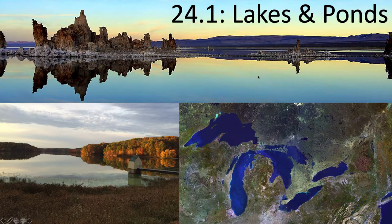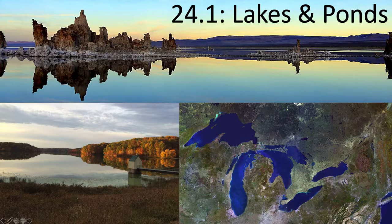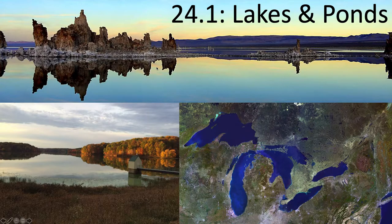Let's first talk about lakes and ponds. This is a picture of Walden Pond — where Henry David Thoreau lived and wrote — in Massachusetts. These are the Great Lakes, which are so large they kind of behave like oceans in some parts. And this is Mono Lake, a highly alkaline lake in California with weird alkali flies and other unusual organisms. You should visit it.